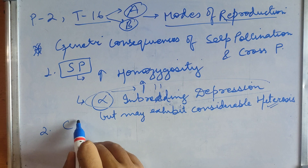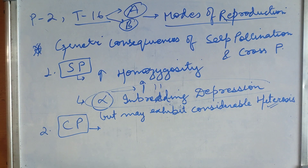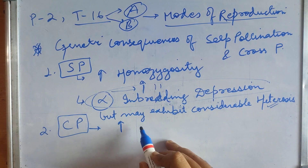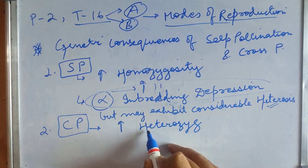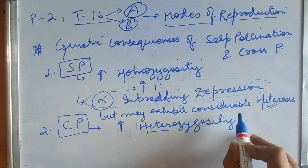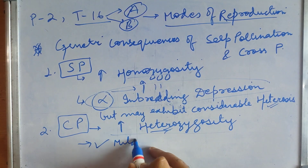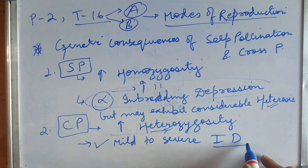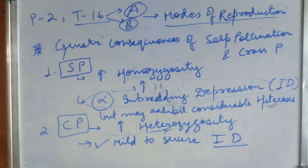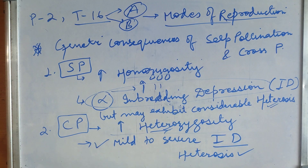Moving on to cross-pollination: cross-pollinated species preserve and promote heterozygosity. Hence, populations of cross-pollinated species are highly heterozygous. They show mild to severe inbreeding depression, and also a considerable amount of heterozygosity. This concludes the genetic consequences of self-pollinated and cross-pollinated species.